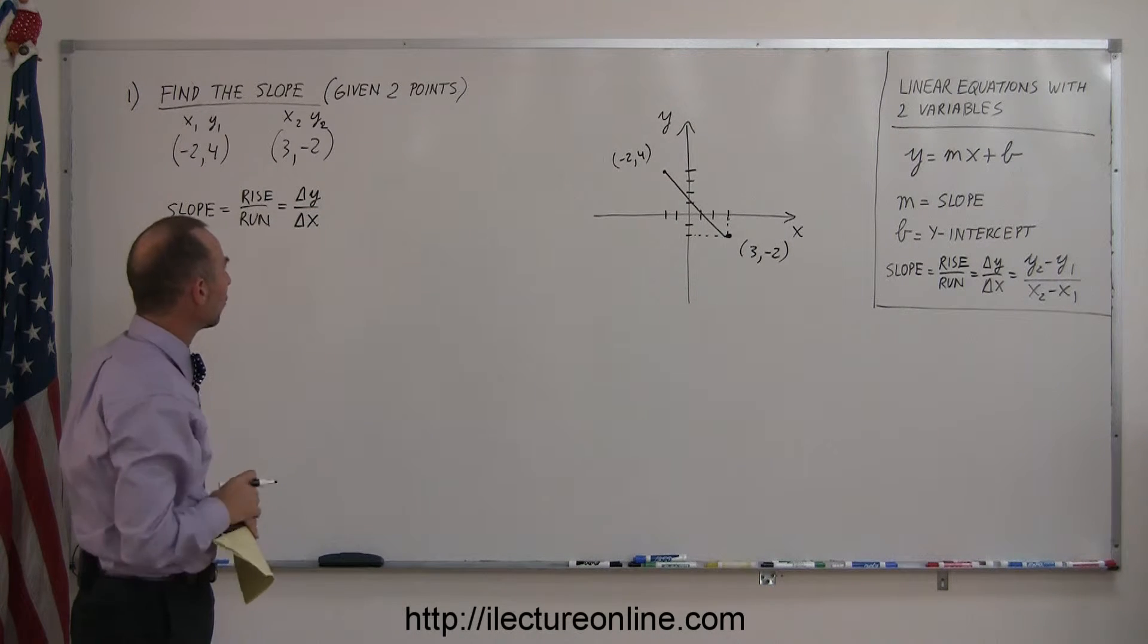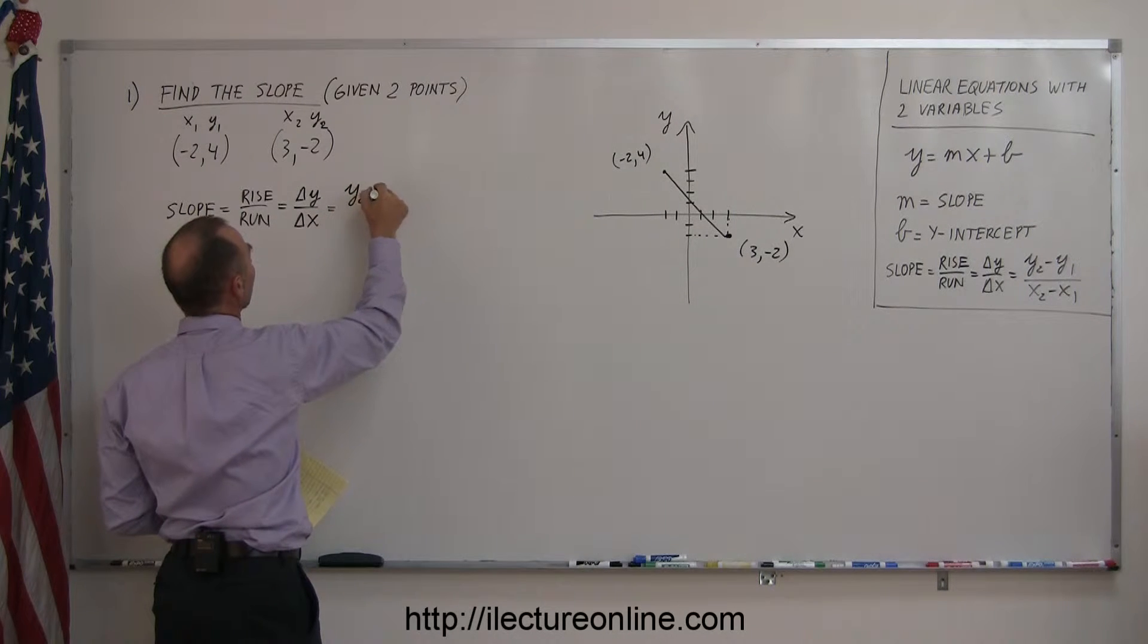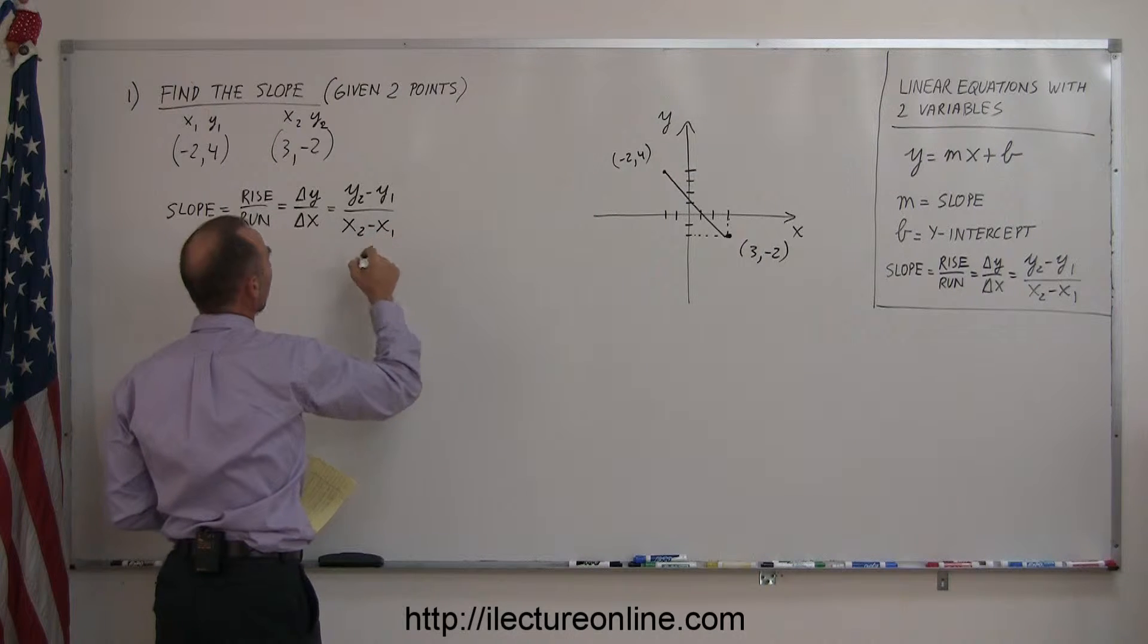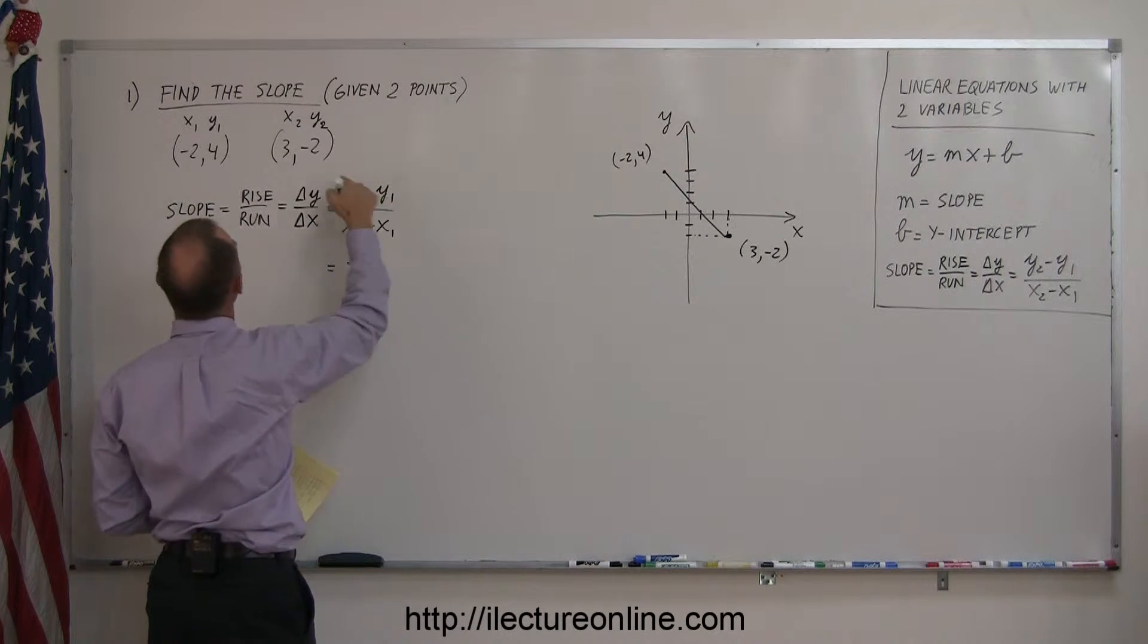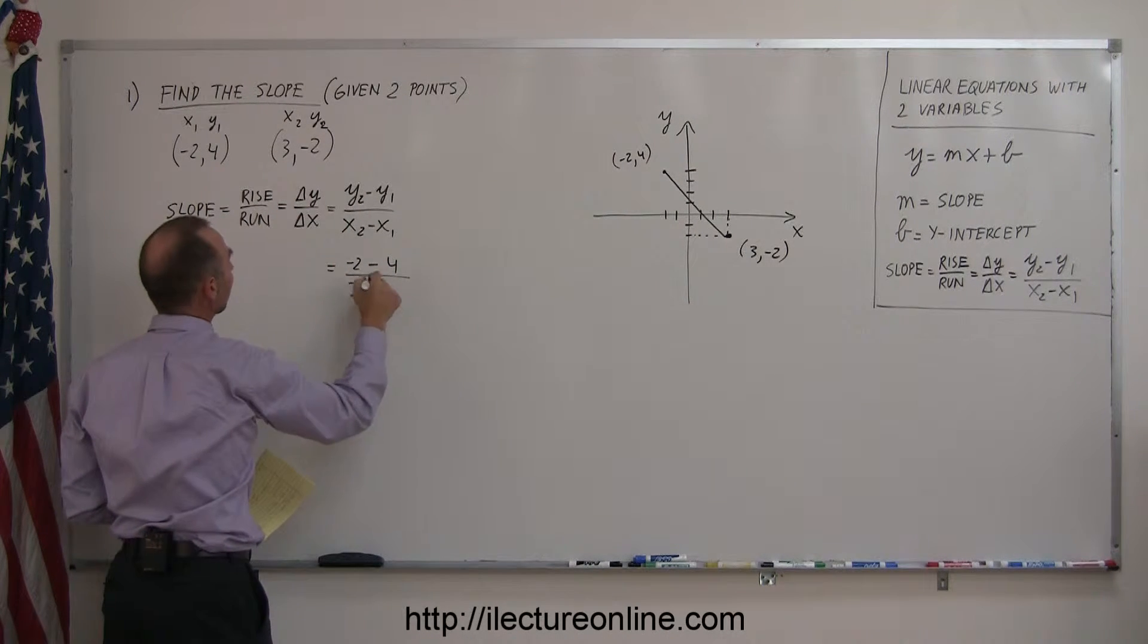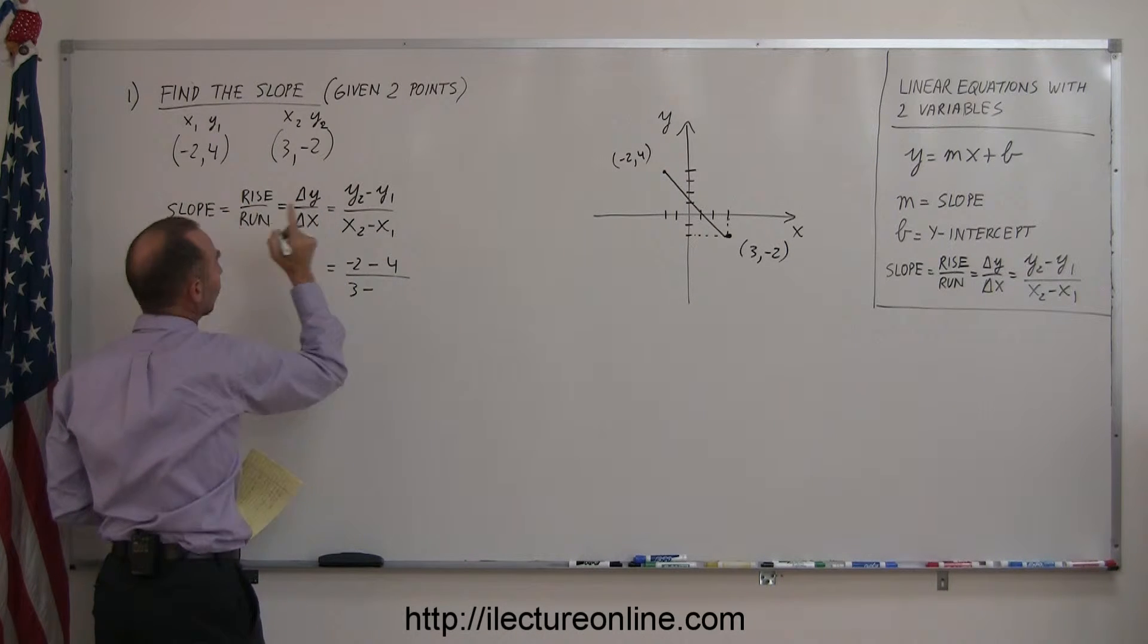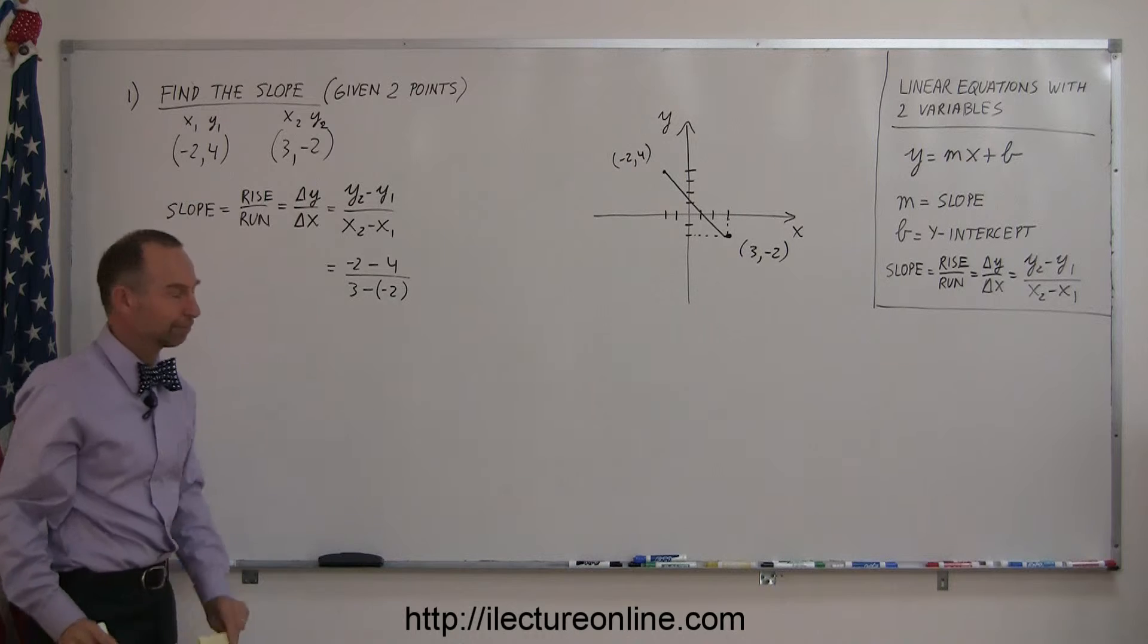So it's the change in the y value divided by the change in the x value. This little triangle here, that means change. How much does the value in y change, and by definition, that is y2 minus y1 divided by x2 minus x1. So, y2 is negative 2, minus y1, which is 4, divided by x2, which is 3, minus x1, which is a negative 2, so be careful, we have to put parentheses around that, negative 2 like that.